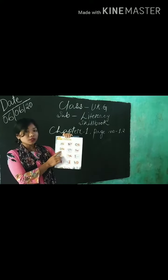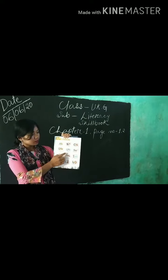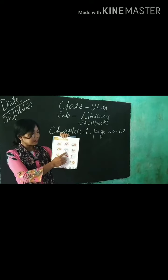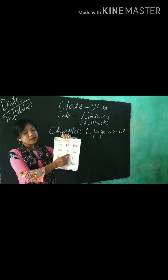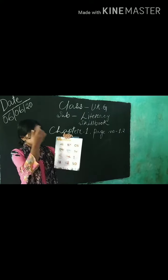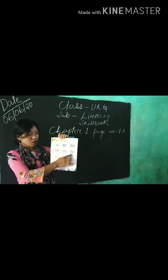D for Dog — D, O, G. Dog. E for Elephant — E, L, E, P, H, A, N, T. Elephant. F for Fox — L, O, X. Fox.